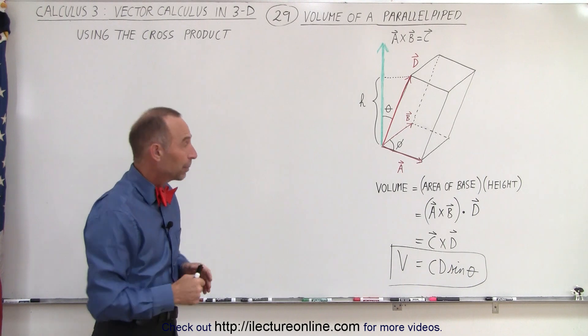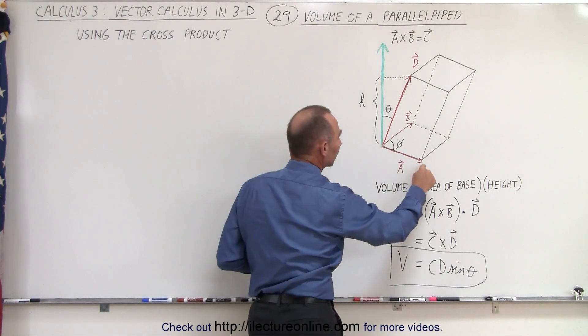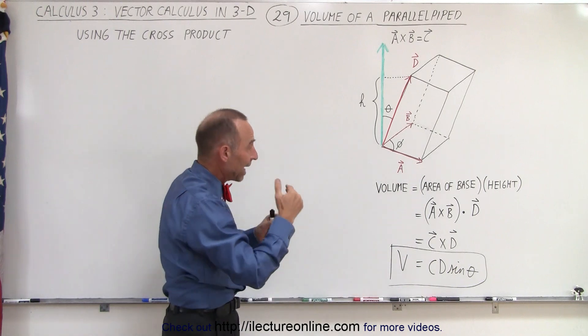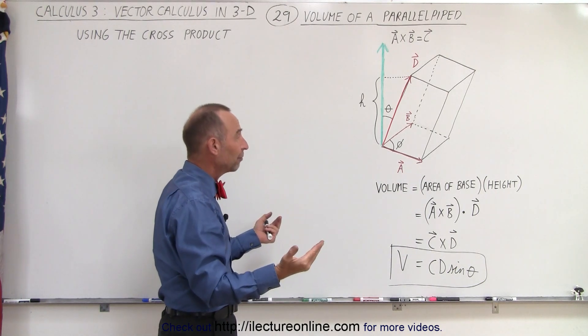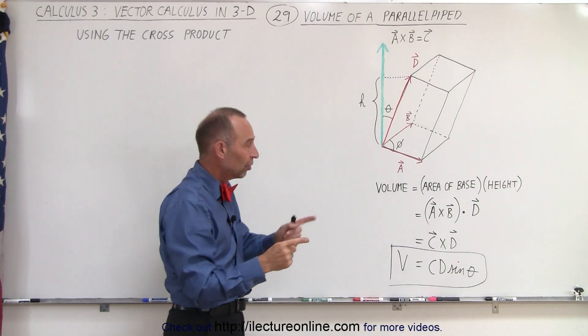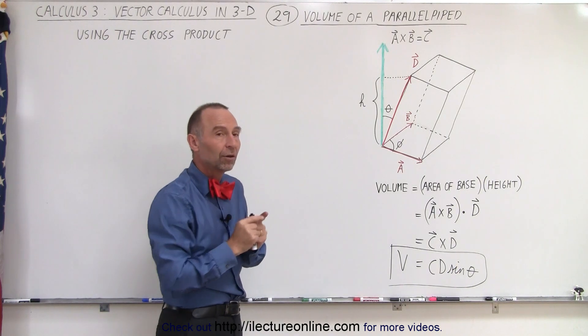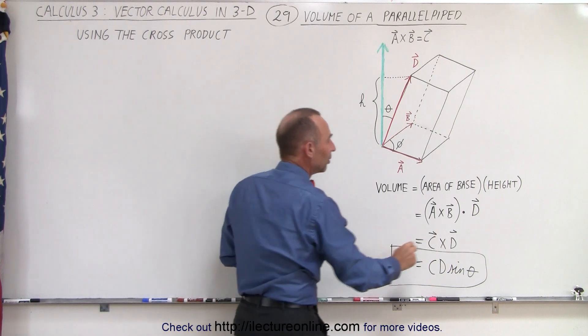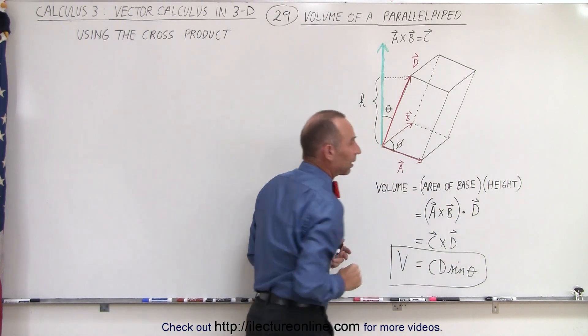So what that means is, if we have a parallelepiped and you know the location of the corners of the parallelepiped so that you can define the three vectors A, B, and D, all you have to do is take any two of the three vectors, take the cross product of those two vectors, and then multiply that times the third vector via the dot product.